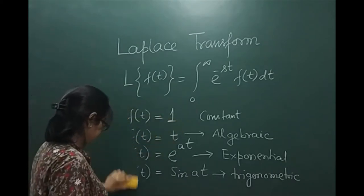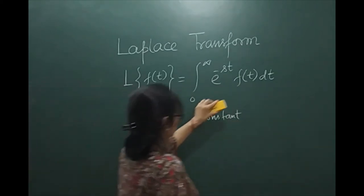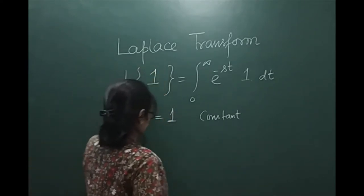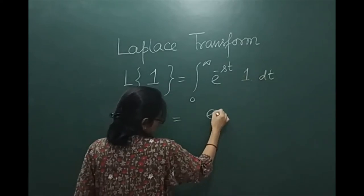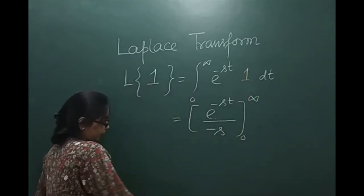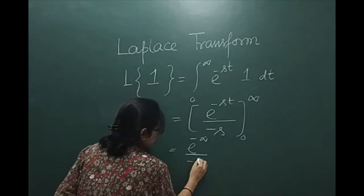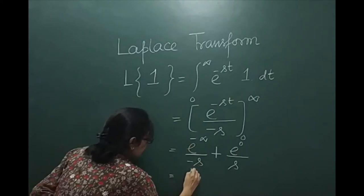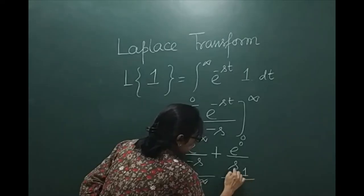First, let us take f(t) as 1. So let us put 1 here. This is simply the integration of e^(-st) dt, and that equals e^(-st) divided by (-s), evaluated from 0 to infinity. Now let us put the limits: e^(-s·∞) divided by (-s), plus e^(0) divided by s.